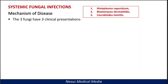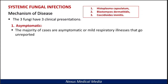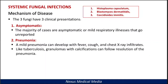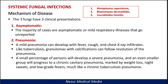Let's look at the mechanism of the disease. These three fungi will cause three clinical presentations. The first is asymptomatic — the majority of cases are asymptomatic or mild respiratory illnesses that go unreported. The second is pneumonia: a mild pneumonia can develop with fever, cough, and chest X-ray infiltrates. Like tuberculosis, granulomas with calcifications can follow resolution. A small percentage will develop severe pneumonia, and an even smaller group will progress to chronic cavitary pneumonia marked by weight loss, night sweats, and low-grade fever, much like chronic tuberculosis pneumonia.